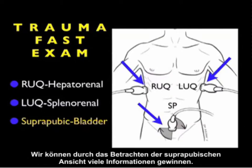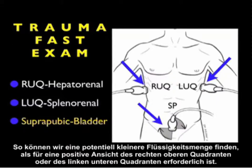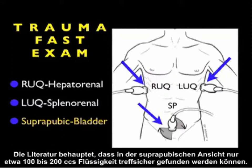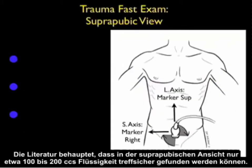There's a lot of information we can gain from looking at the suprapubic view, as we can potentially detect a smaller amount of fluid than is required to make a positive right upper quadrant or left upper quadrant view. The literature suggests that only about 100 to 200 cc's of fluid can be detected accurately on the suprapubic view.